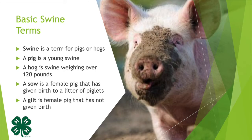A hog is swine weighing over 120 pounds, so a hog is bigger than a pig. A sow is a female pig that has given birth to a litter of piglets, and a gilt is a female pig that has not given birth, so a gilt is probably younger than a sow.